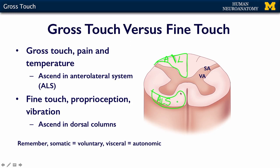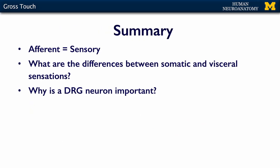So to summarize: two different systems carry different modalities of sensation — gross touch, pain, and temperature in one; fine touch, vibration, and proprioception in the other. Remember that afferent means sensory. Know the differences between somatic and visceral sensations, where they enter the dorsal horn, why the DRG neuron is important, and the distinction between gross touch/pain/temperature versus fine touch/proprioception/vibration. If you know these differences, you'll be ready for the assessment.